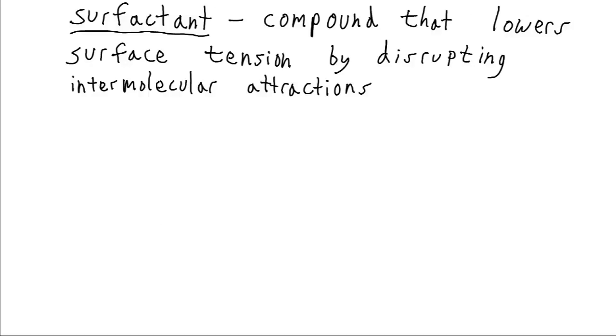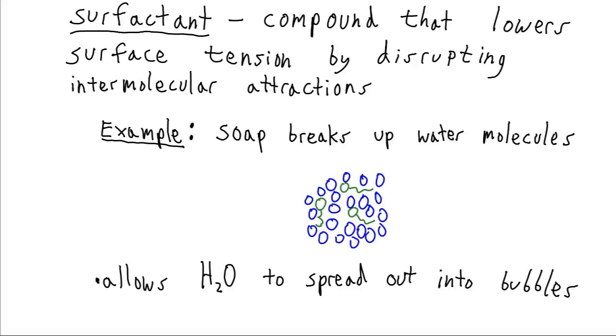If we wanted to decrease water's surface tension, what we would need is a surfactant. This is a compound that lowers that tension by disrupting the intermolecular forces. Soap can be applied to water and acts as a surfactant.